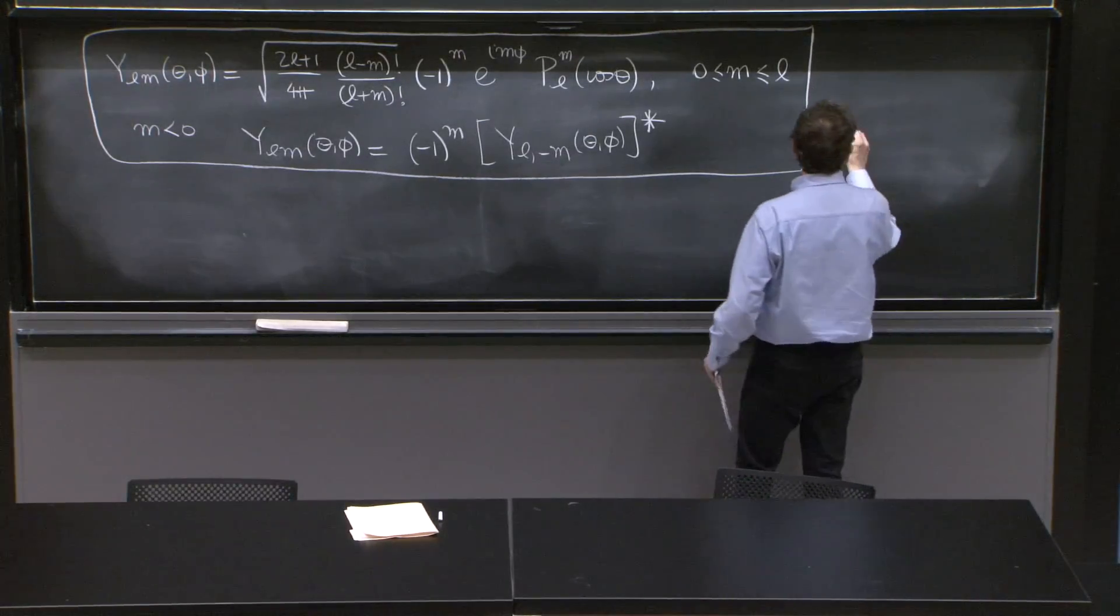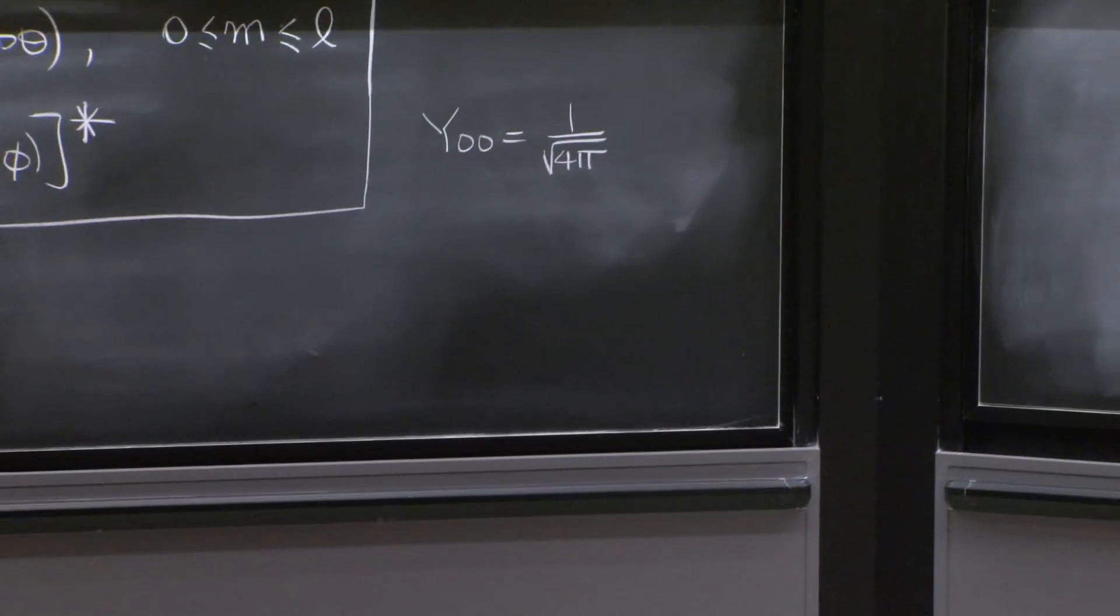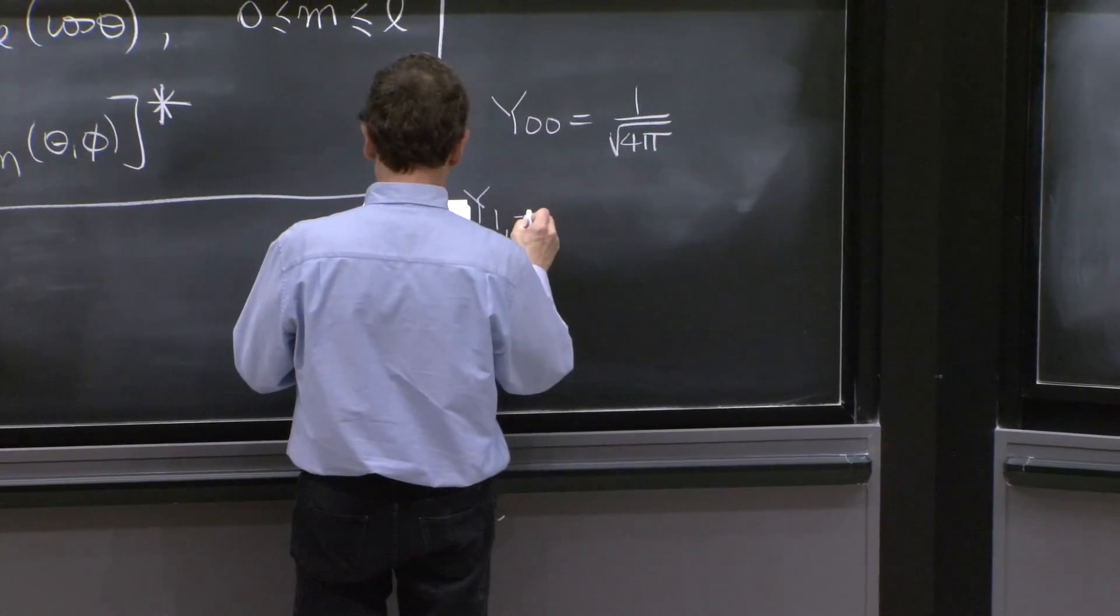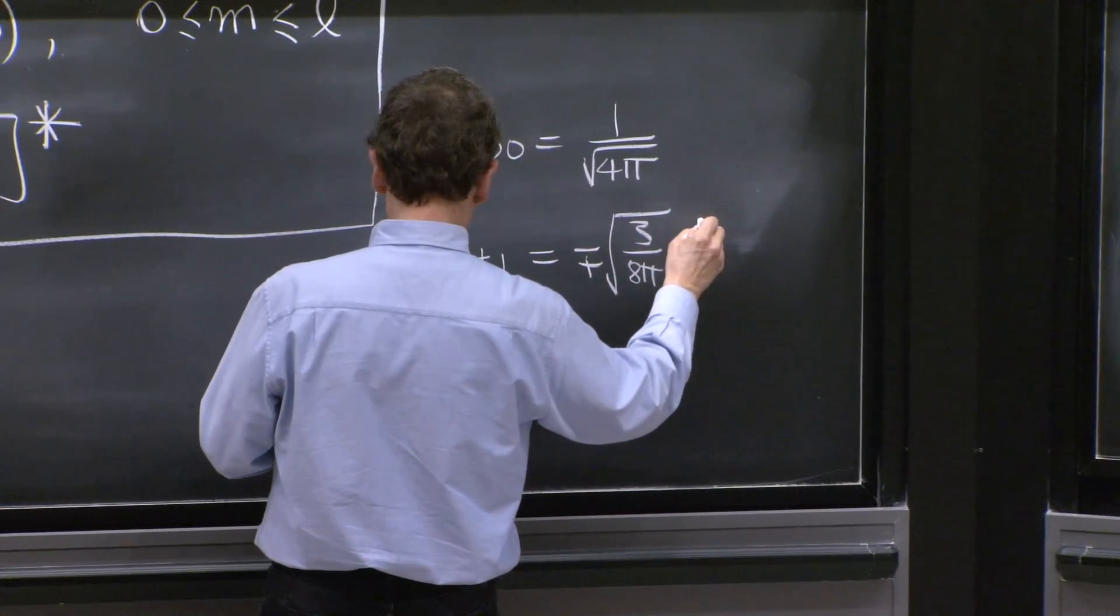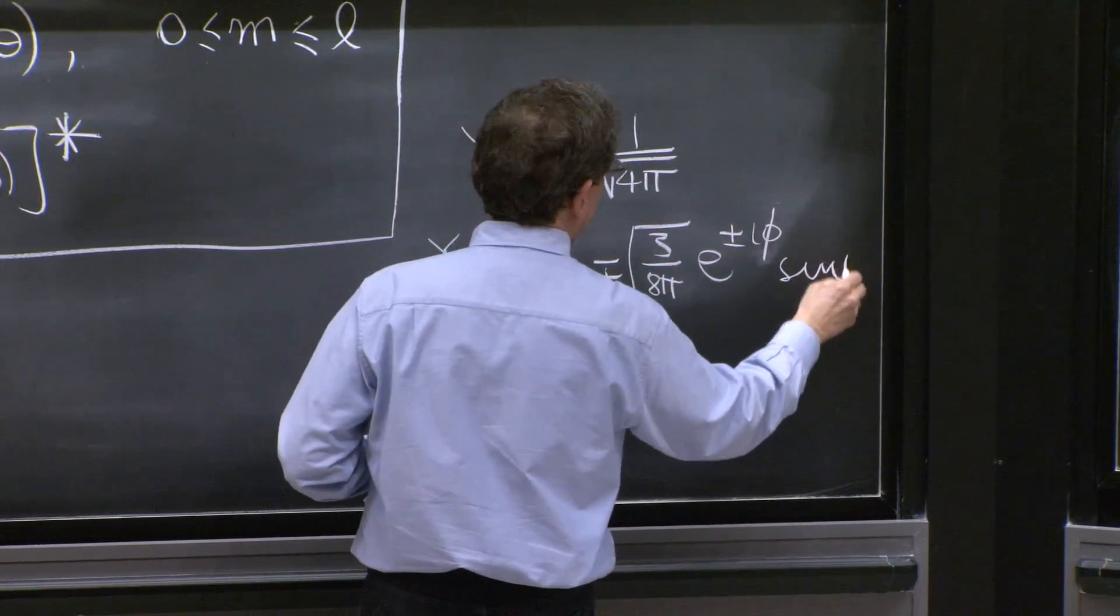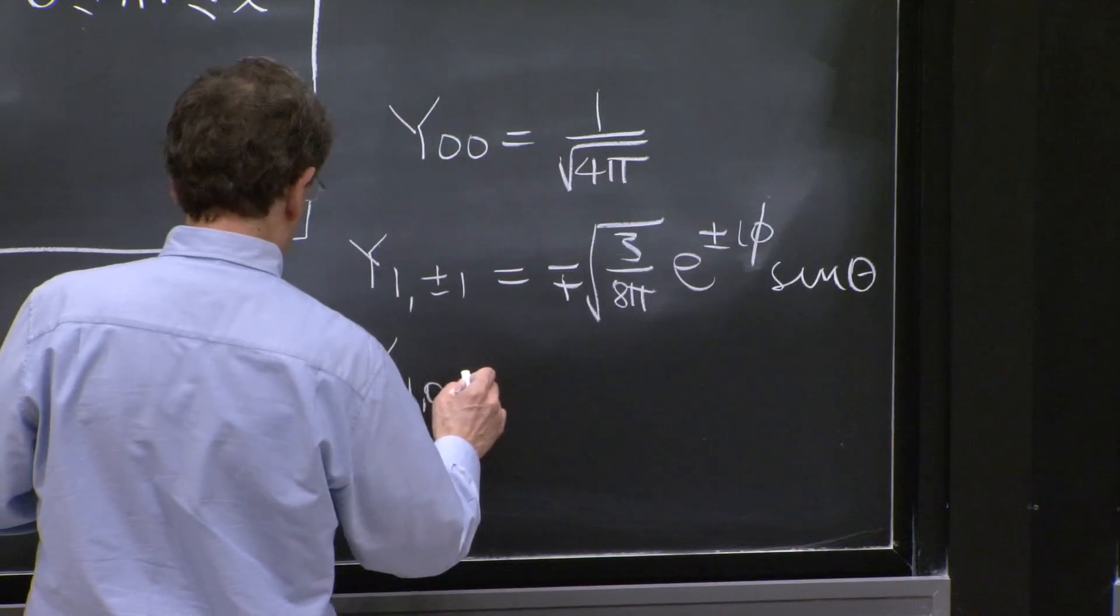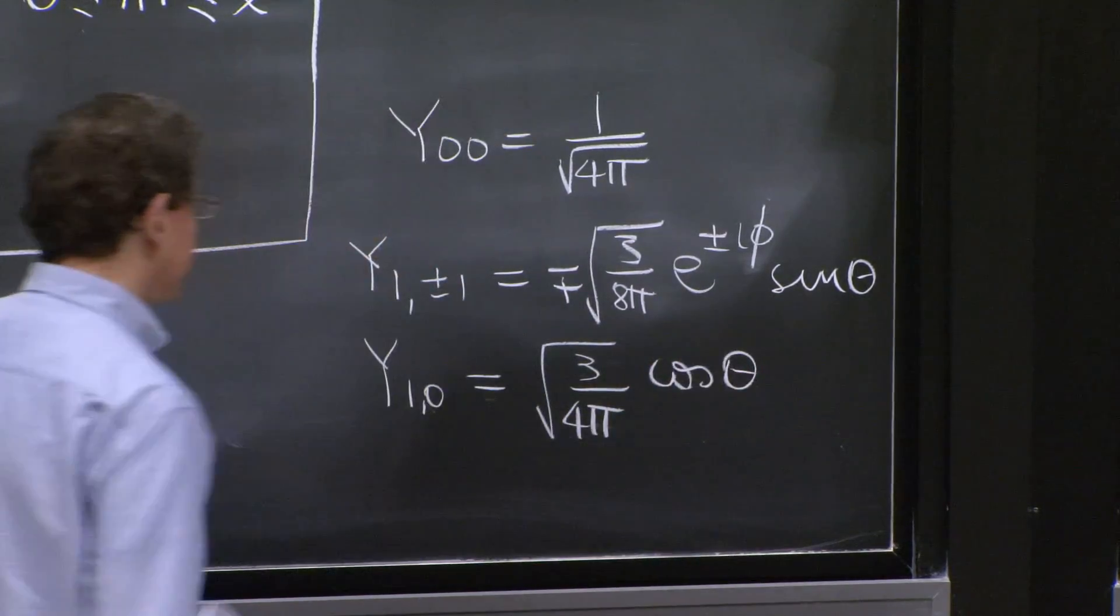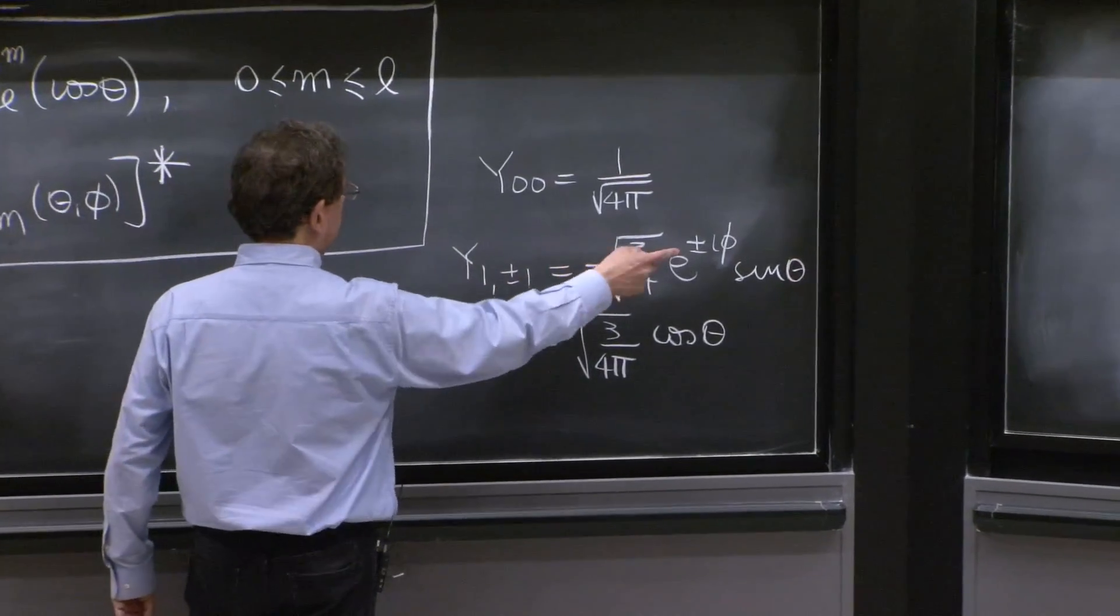The only one I really remember is that y0,0 is a constant. That's 1 over 4 pi. That's simple enough. No dependence. L equals 0, m equals 0. Here is another one. y1 plus minus 1 is minus plus square root of 3 over 8 pi e to the plus minus i phi sine theta. The last one, so we're giving all the spherical harmonics with l equals 1. With l equals 1, remember we mentioned that you would have three values of m. Here they are, plus or minus 1 and 0.